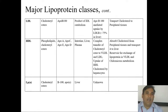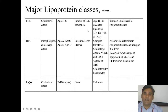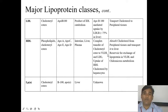LDL contains cholesterol ester and the major apoprotein is apoprotein B-100, derived from IDL. It is taken up by the LDL receptor in the liver and transports cholesterol to peripheral tissues. HDL is very beneficial — it contains phospholipids and cholesterol esters, with apoproteins A, B, C, E, and D. Its sources are the intestine, liver, and plasma. It transfers cholesterol esters to VLDL and LDL, absorbs cholesterol from peripheral tissue, and transports it to the liver. It also acts as a reservoir for the exchange of lipoproteins with VLDL and chylomicrons.